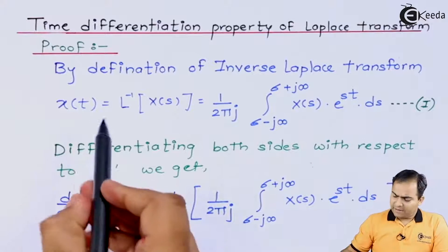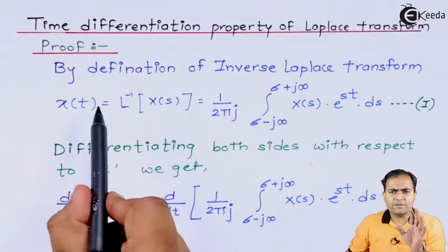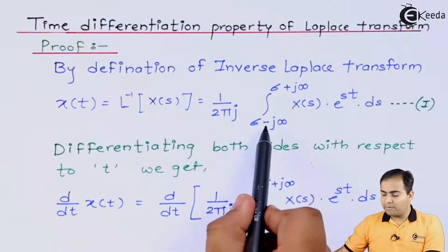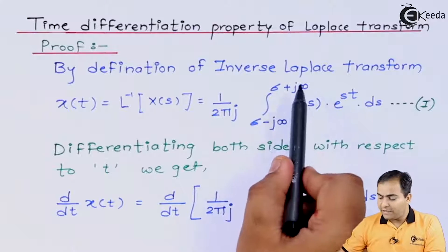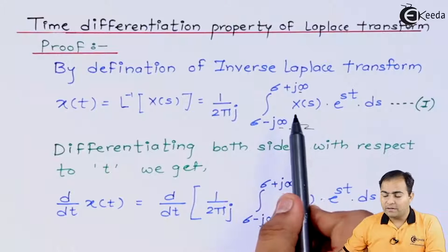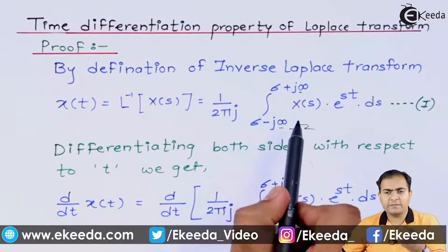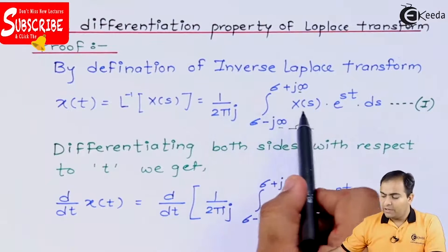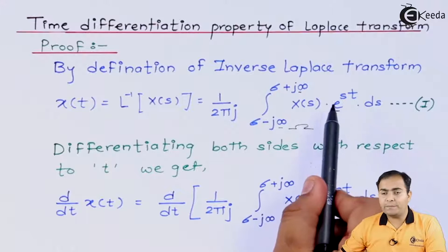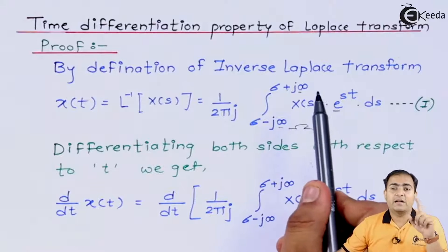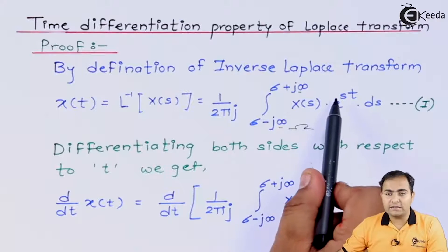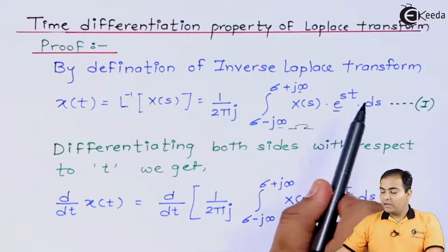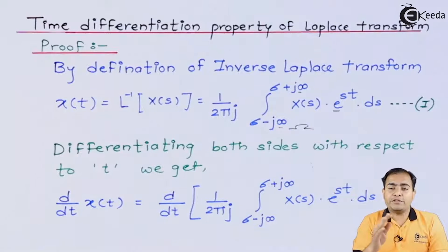To begin the proof, recall the definition of the inverse Laplace transform: x(t) equals the inverse Laplace of X(s), given by 1/(2πj) times the integral where s varies from σ − j∞ to σ + j∞. Here σ is the real term and ω is the imaginary term, with ω varying from minus infinity to plus infinity while the real term is constant. X(s) is multiplied by e^(st) in the inverse Laplace expression.